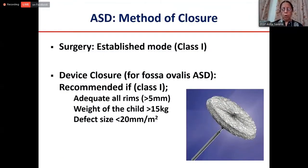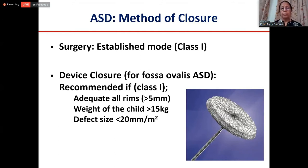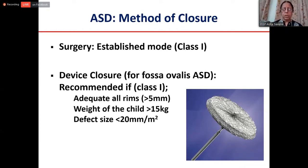For the method of closure, surgery has been established since the 1950s and has absolutely negligible morbidity and mortality. For the last three decades, devices have become available specifically for fossa ovalis ASD. For fossa ovalis ASDs that are central, have adequate rims all around, and the child is a bit bigger with a defect that is not very large, one can go ahead with device closure using a centering device like an AGA or LifeTech device.